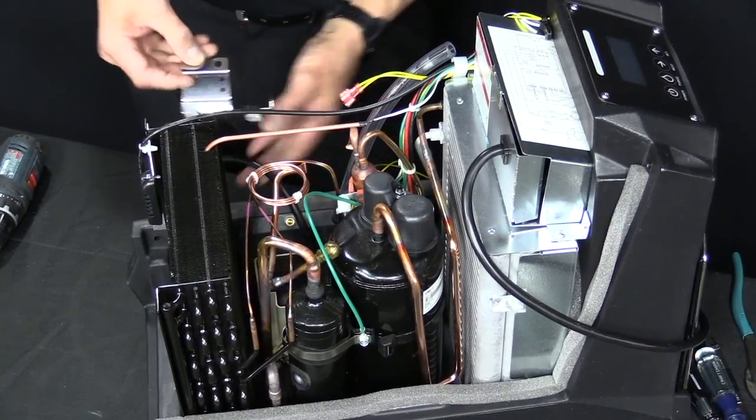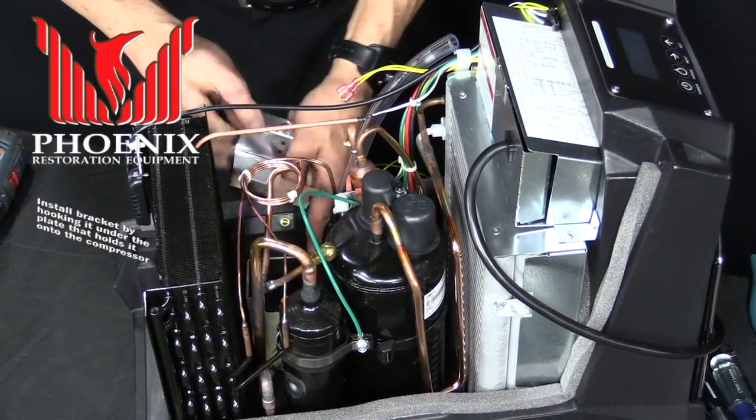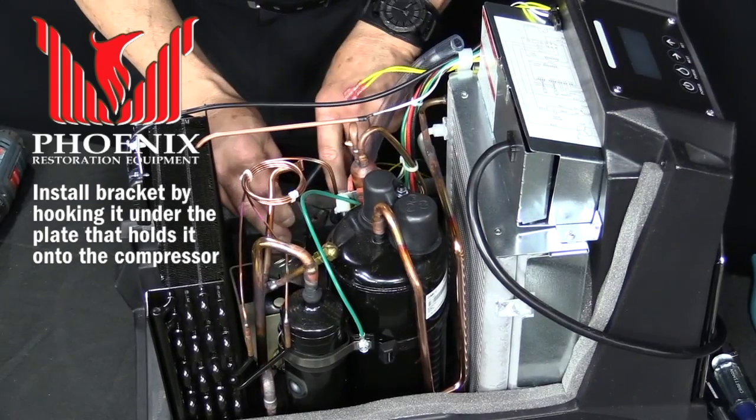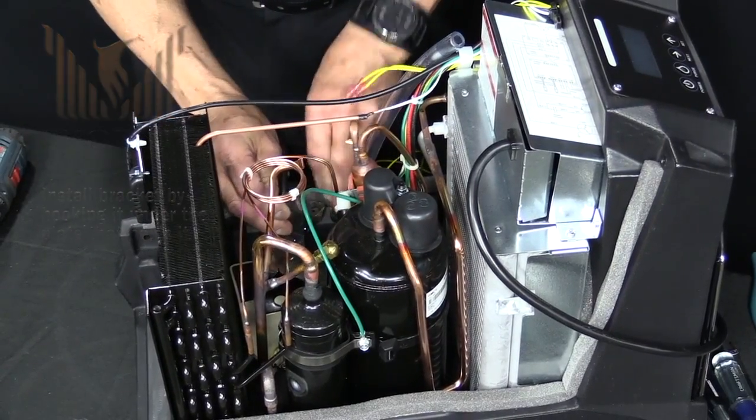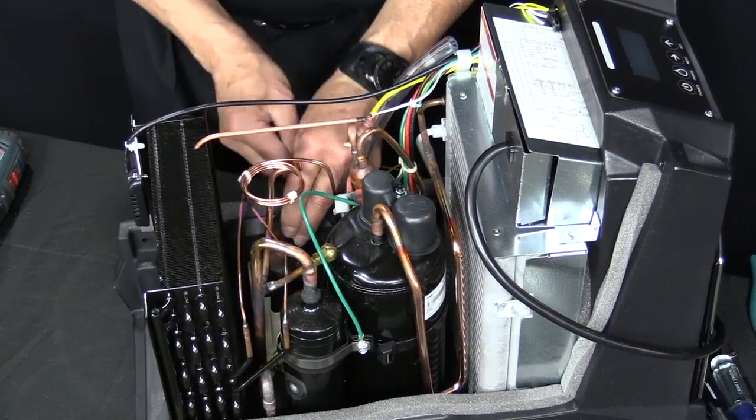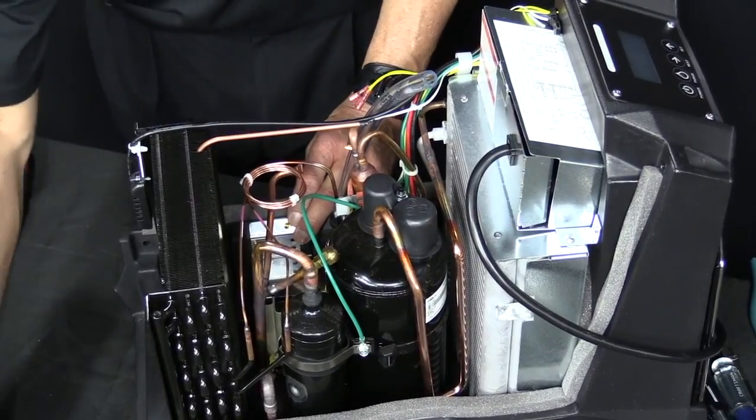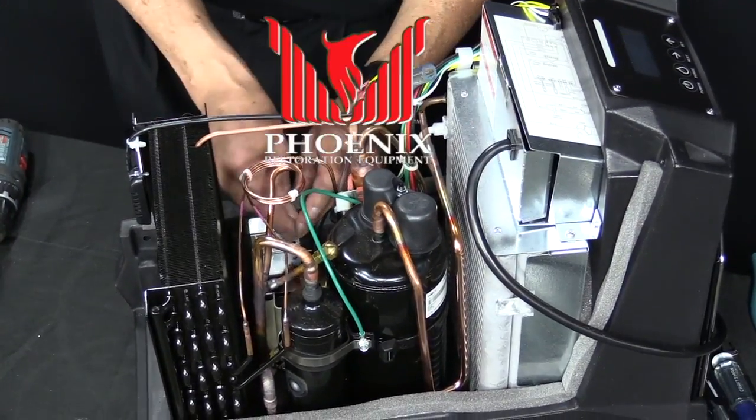Next we'll reattach the bracket. The bracket has to hook under the plate that holds onto the compressor and will lay right on top of the pump. Next we'll reinstall the bolt.